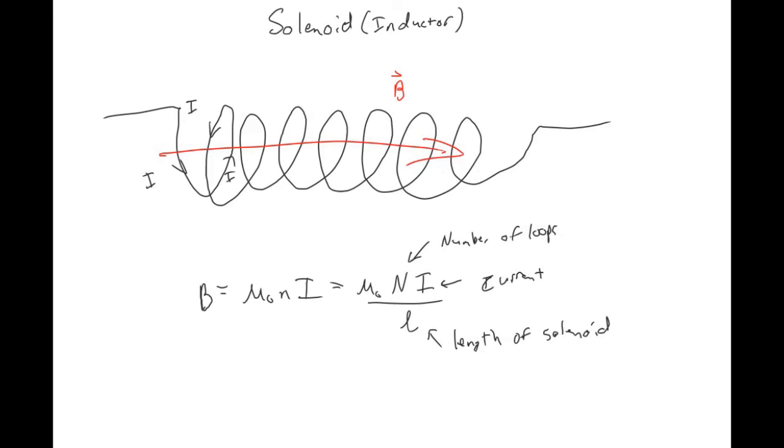And then instead of writing N over L, you can write lowercase n, which is the turn density of the solenoid. So we're just going to introduce this now, and then we'll talk about solenoids more later. I guess the important thing here is that this is a uniform magnetic field. And sometime soon we'll talk about how these things operate in a circuit.